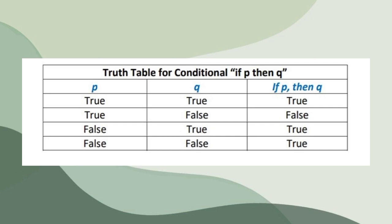If P then Q. P is true, true, false, false. For Q, we have true, false, true, false. If P then Q, we have true, false, true, true.